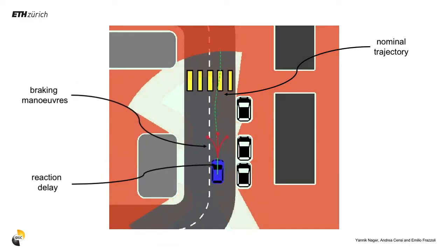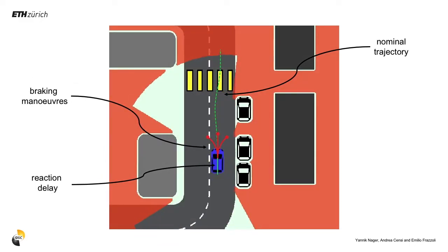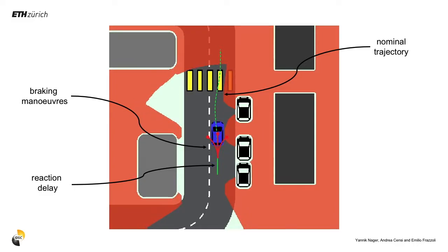However, if the car is shifted slightly to the left and has lower velocity, it is able to safely come to a stop without the possibility of an active collision.